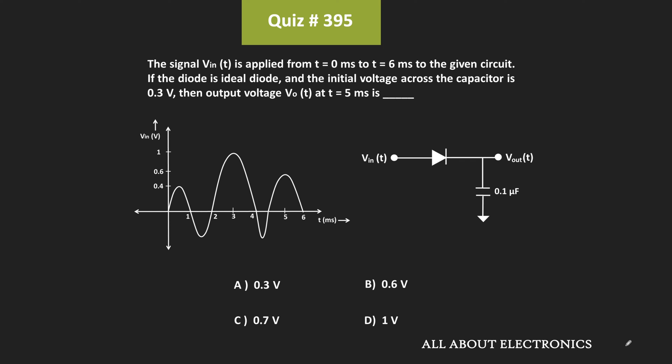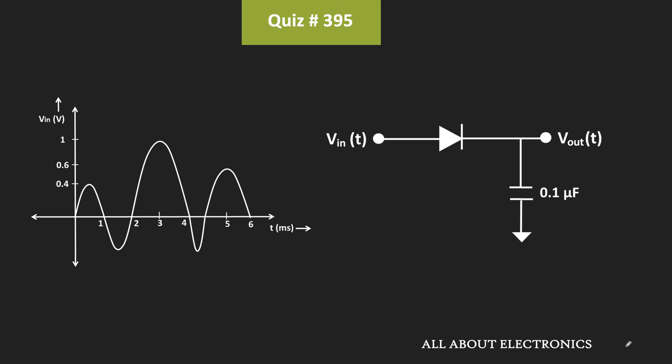Hey friends, welcome to the YouTube channel all about electronics. So in this question, for the given circuit, we have been given the input signal and we have been asked the output voltage of the given circuit at time t is equal to 5ms. Now if you know this diode circuit then you can easily say what should be the output of this circuit, because this circuit is the peak detector circuit.